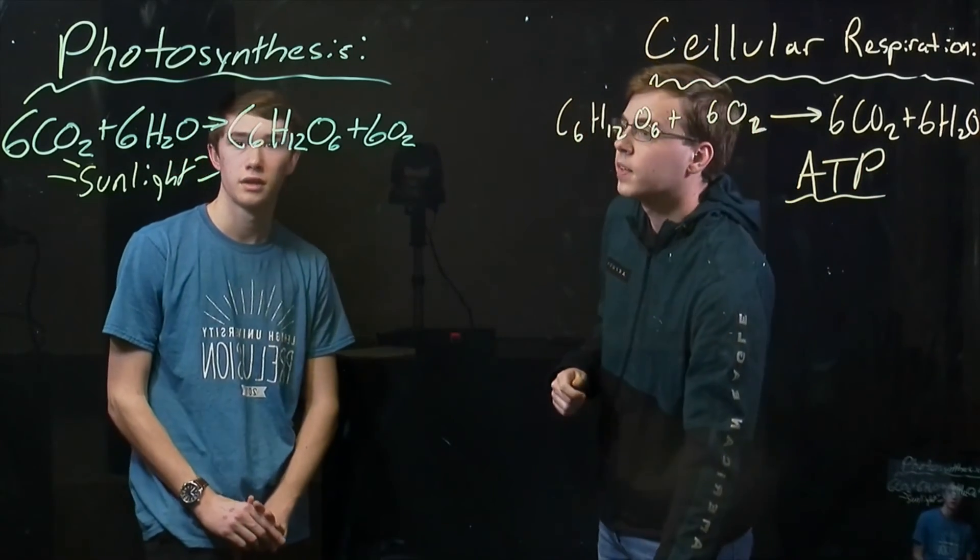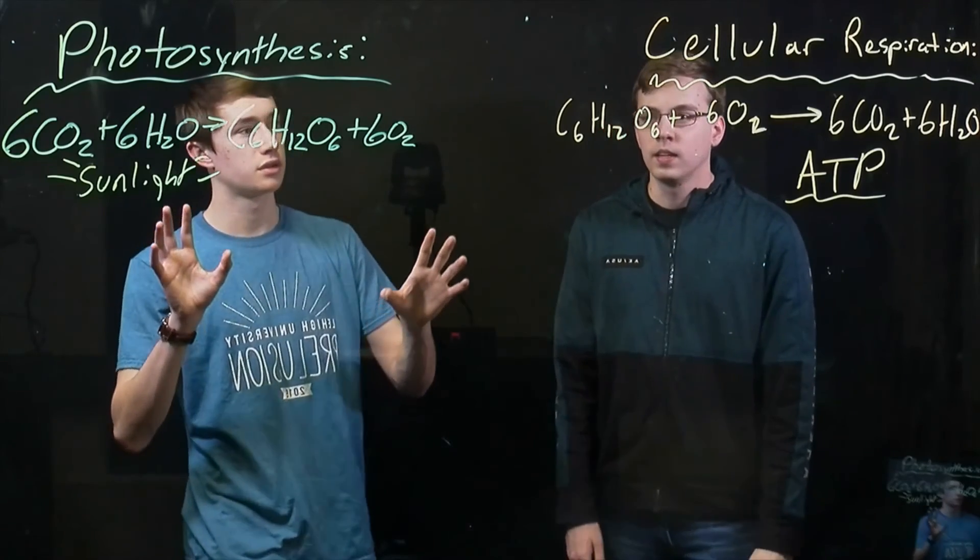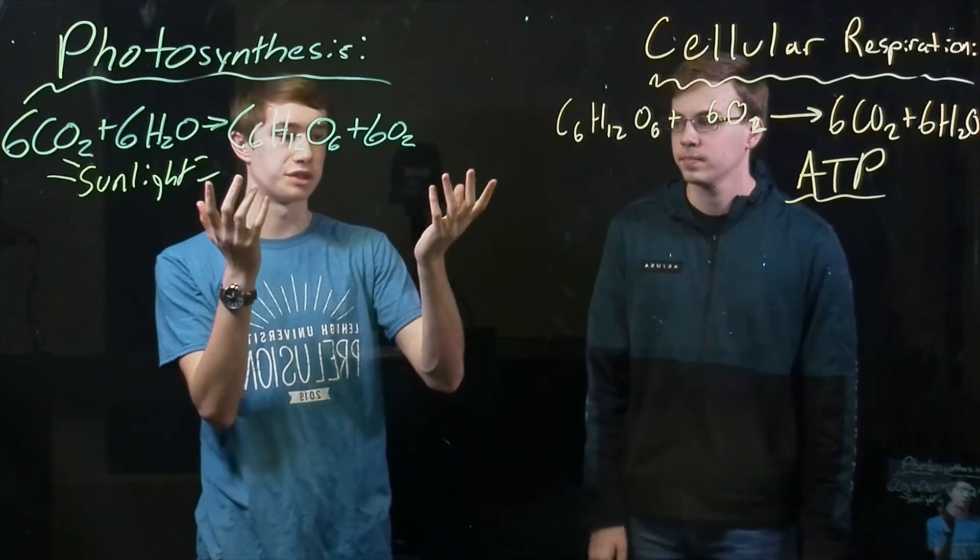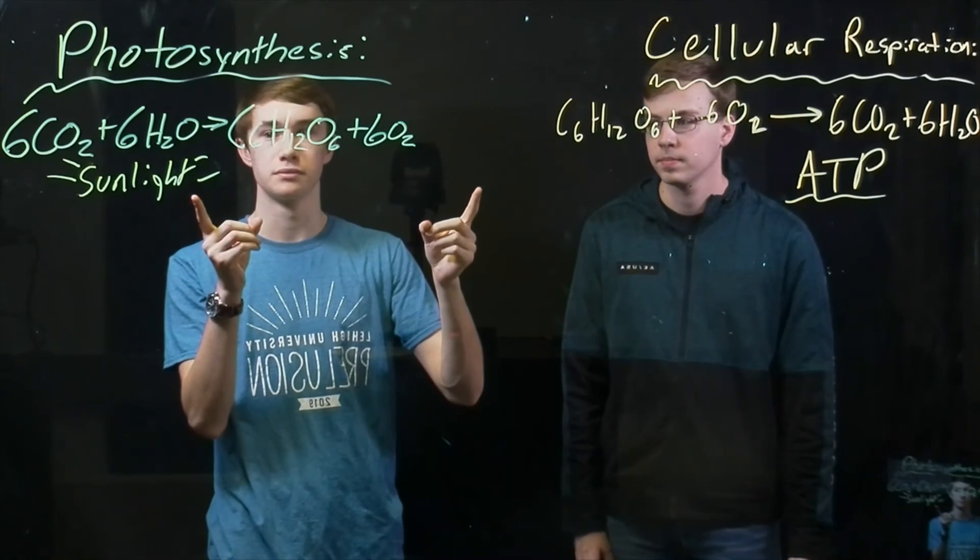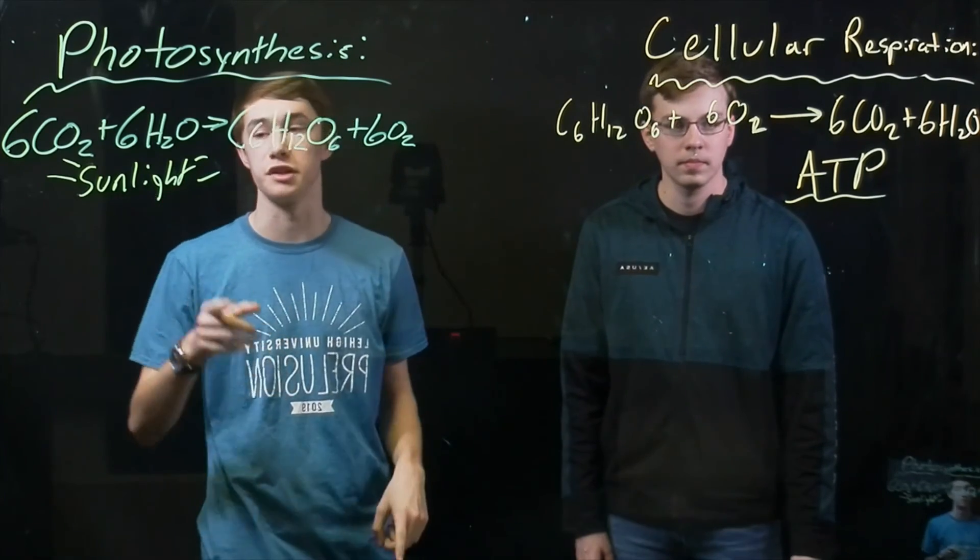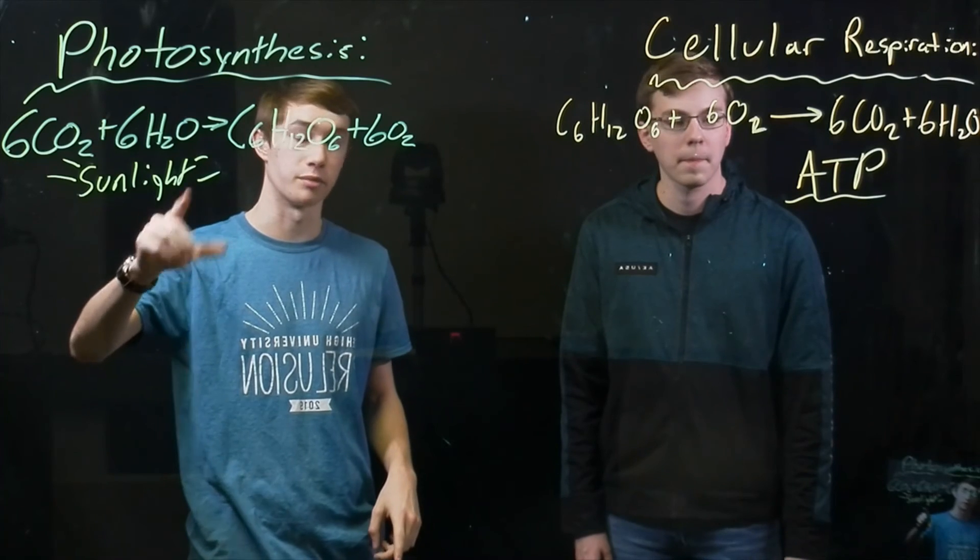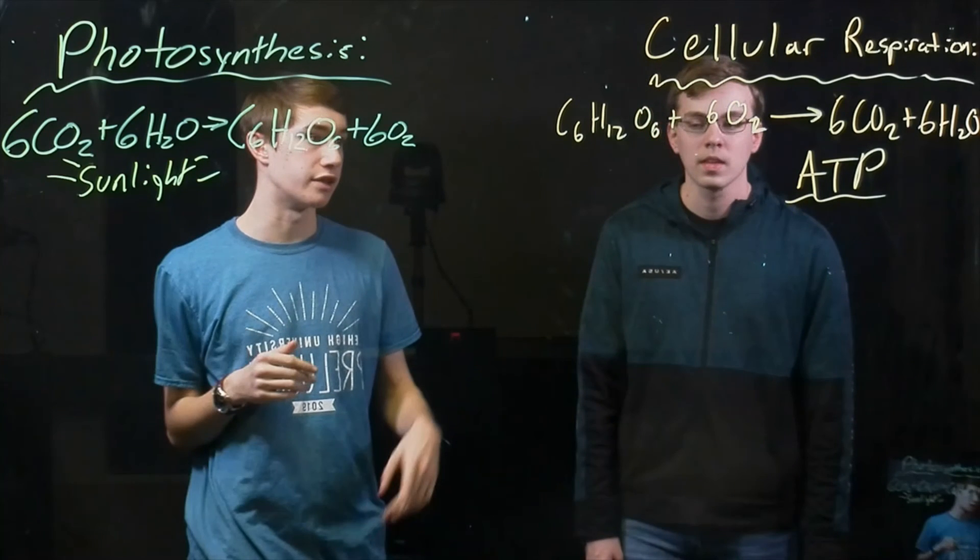All right, so we've got basically two exact opposite reactions, except there's two missing inputs. There's the sunlight and the ATP. This is your light energy that you're going to get from the sun. And then this ATP is in the form of a molecule. So that's chemical energy. And that is used throughout the cell and many other cells to drive reactions.